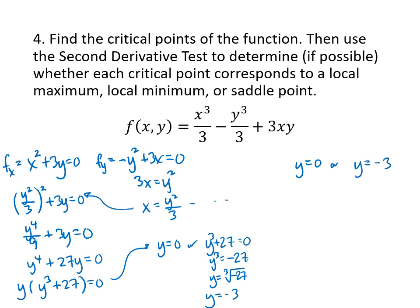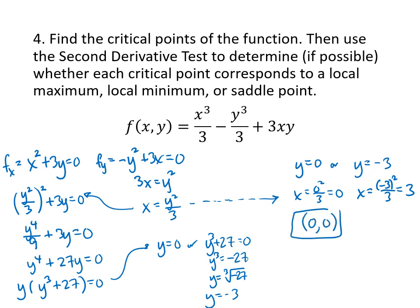Using the x formula: if y equals 0, then x equals 0 squared over 3, which is 0. And if y equals negative 3, then x equals (negative 3) squared divided by 3, which is positive 3. So I get two critical points: (0, 0) and (3, negative 3). Now I've got to test both of those critical points.